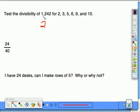When I'm checking for 3, I go back to the sum of the digits. 1 plus 2 is 3, plus 4 is 7, plus 2 is 9, so it is divisible by 3.